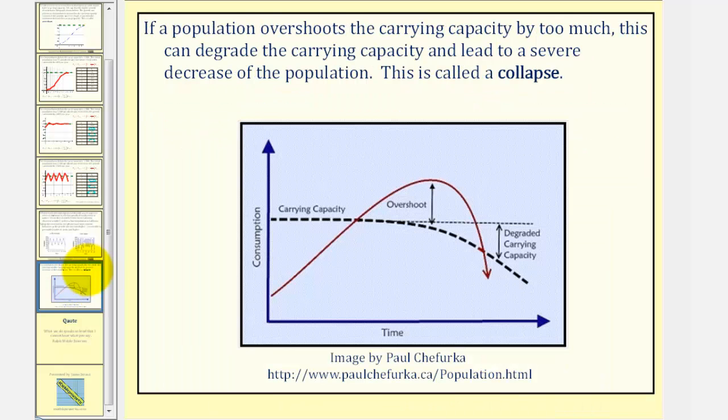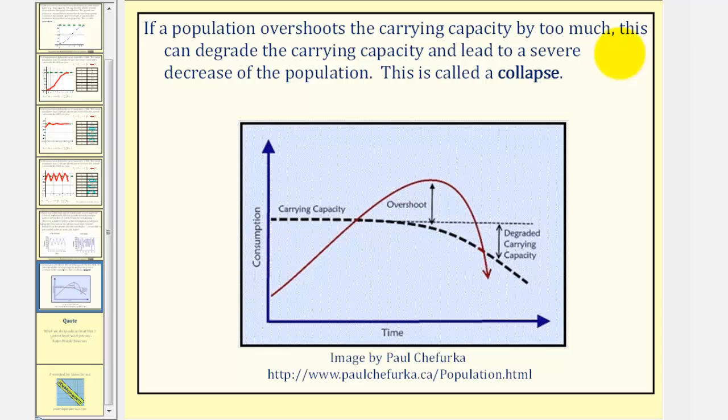If a population overshoots the carrying capacity by too much, this can degrade the carrying capacity and lead to a severe decrease of the population. This is called a collapse.